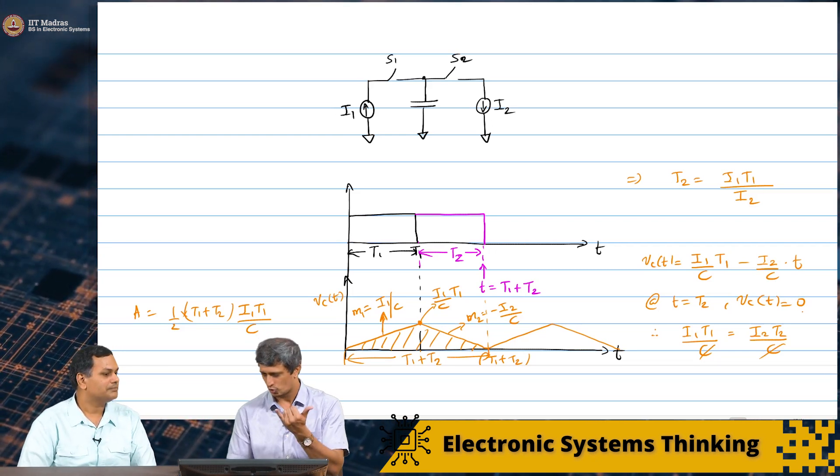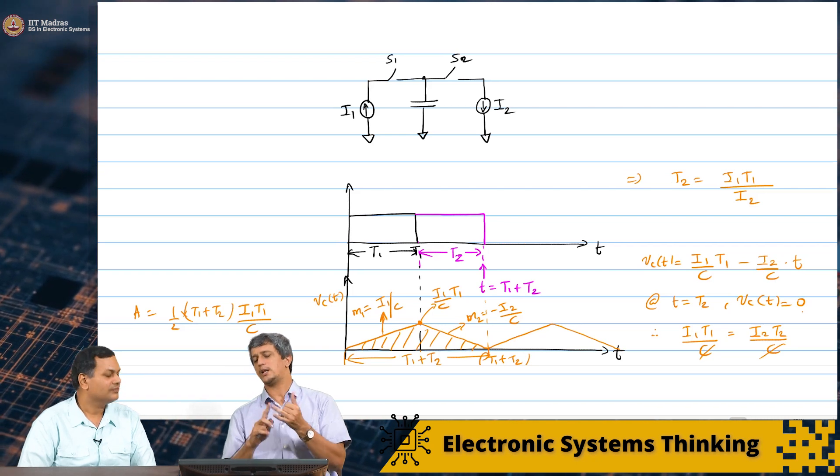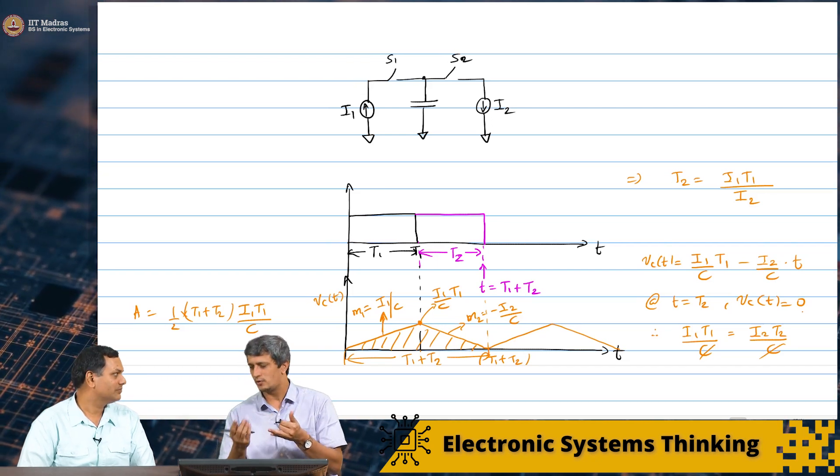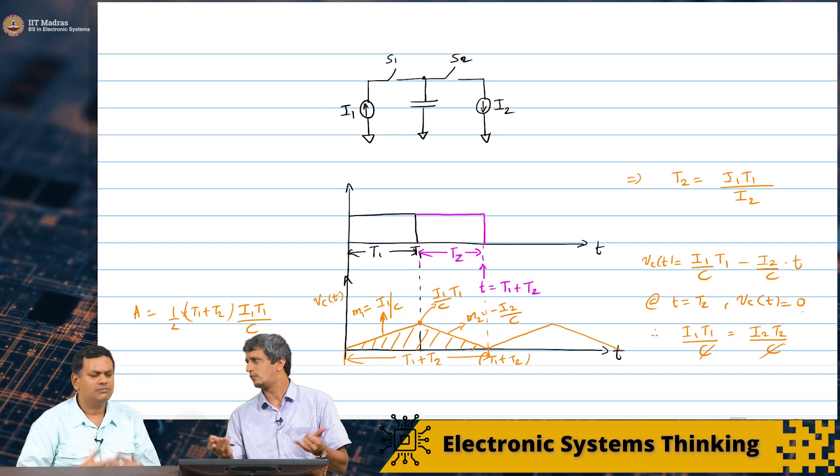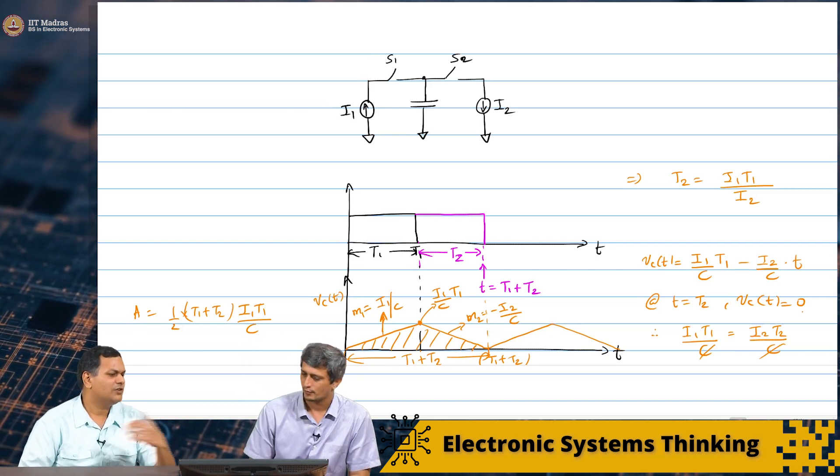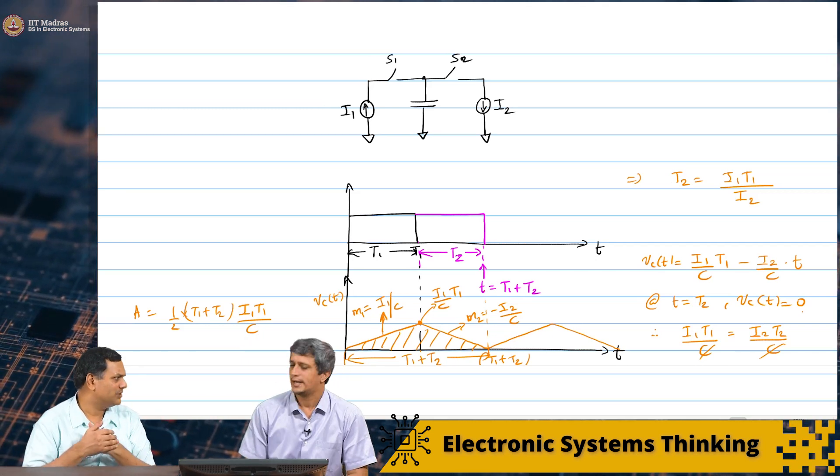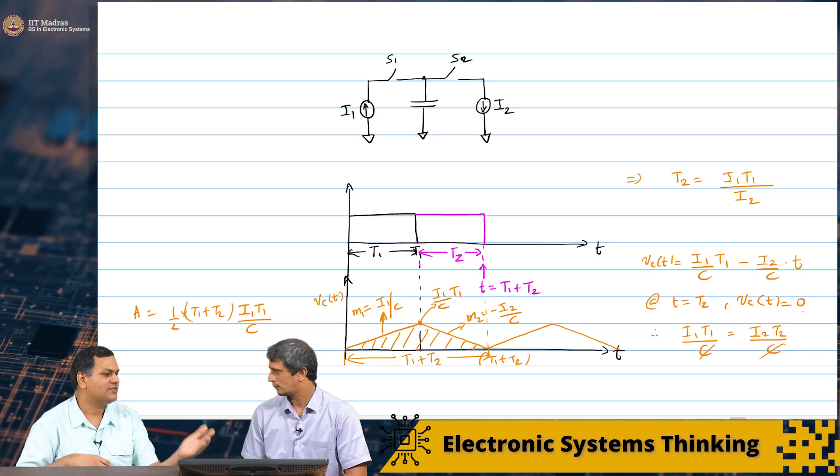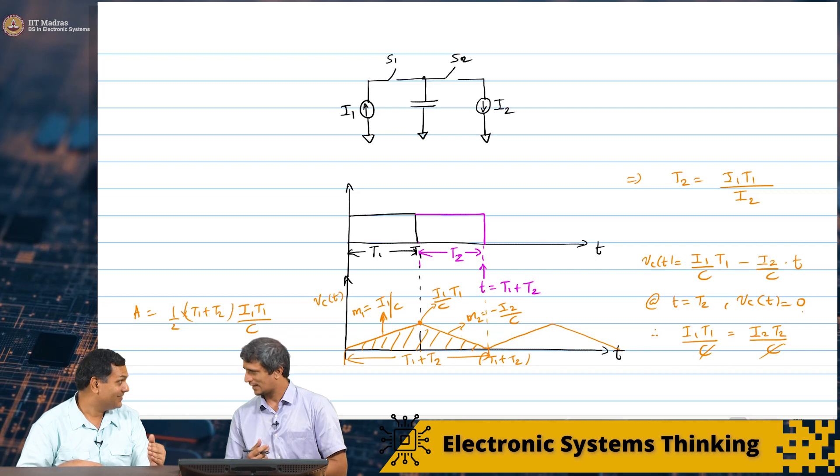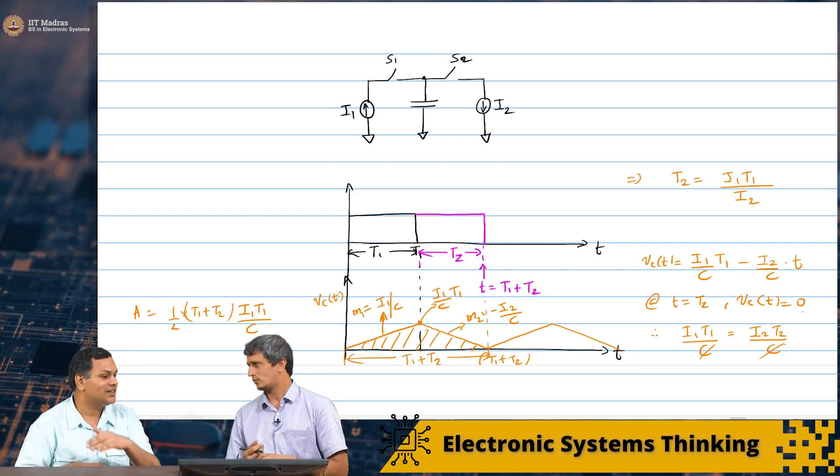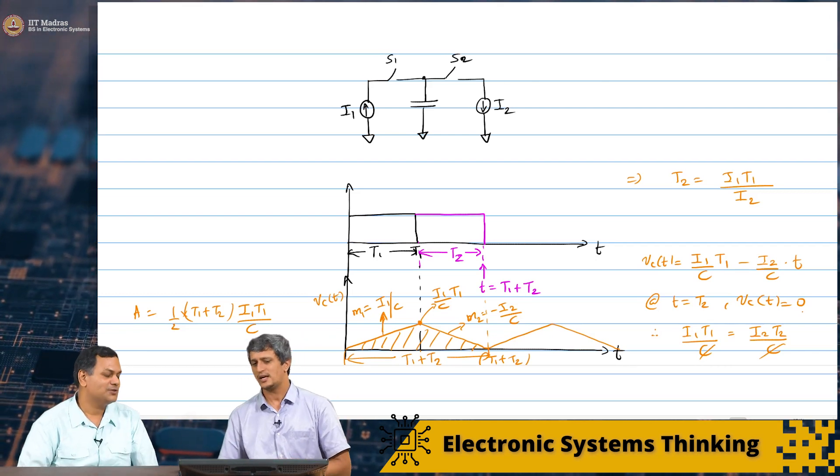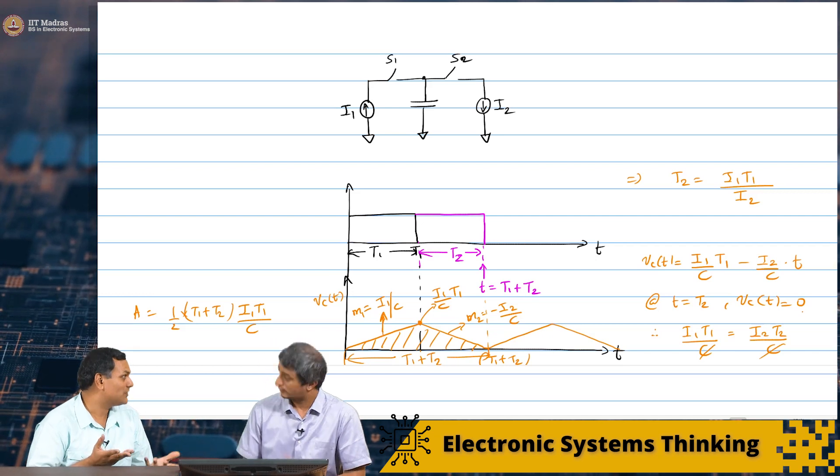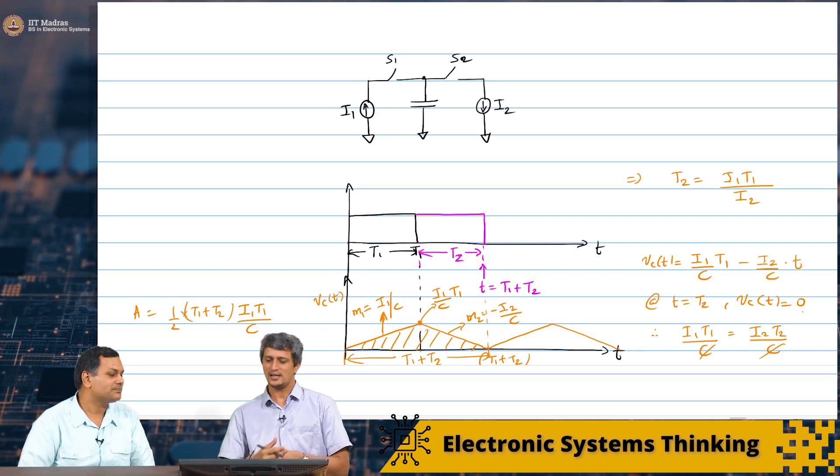You should be able to plot a waveform and then you should be able to evaluate things like area under that curve and stuff like that. And now, we can also extend to energy for example. Power and energy. So, we can see that there is energy being transferred from I1 to C and then from C to I2. And that needs to be balanced as well, most likely.